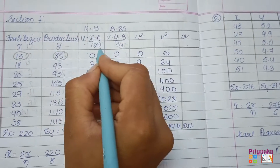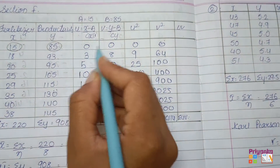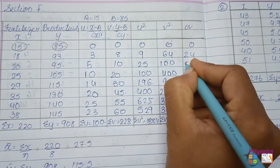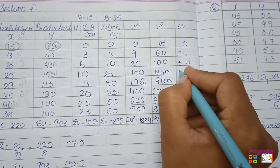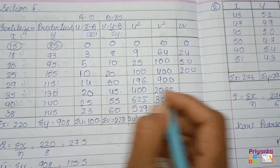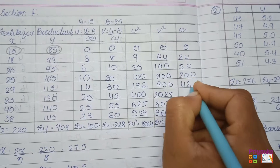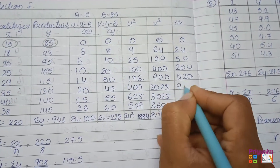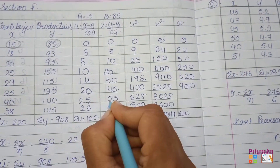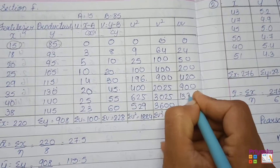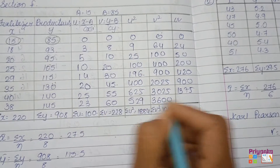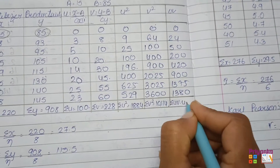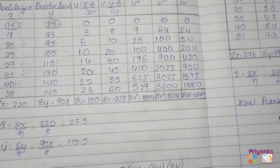Now UV — multiply the U and V columns together: 0 times 0 is 0, 3 times 8 is 24, 5 times 10 is 50, 10 times 20 is 200, 14 times 30 is 420, 20 times 45 is 900, 25 times 55 is 1375, 23 times 60 is 1380. The total of sigma UV is 4349.